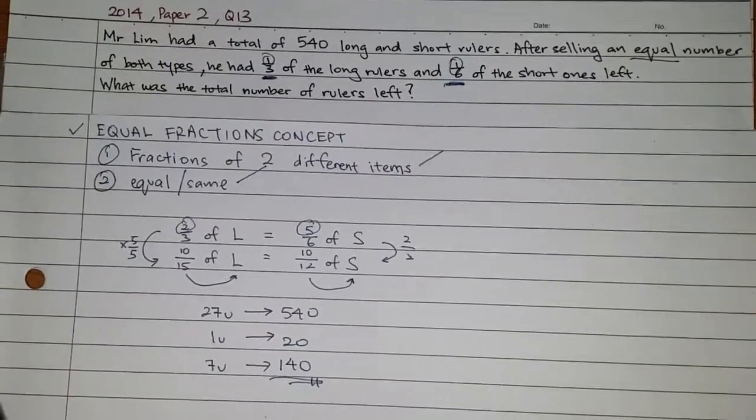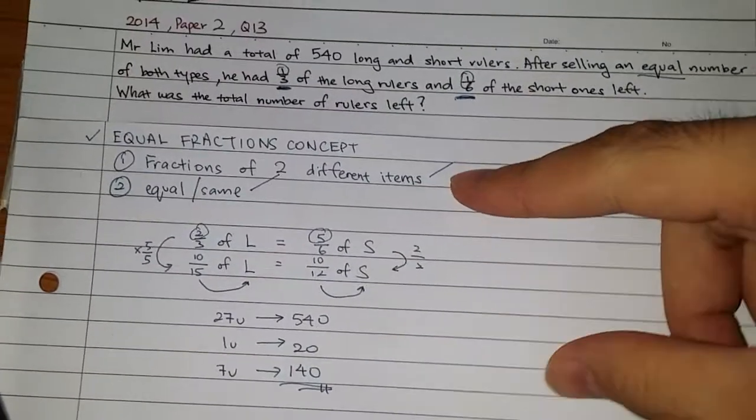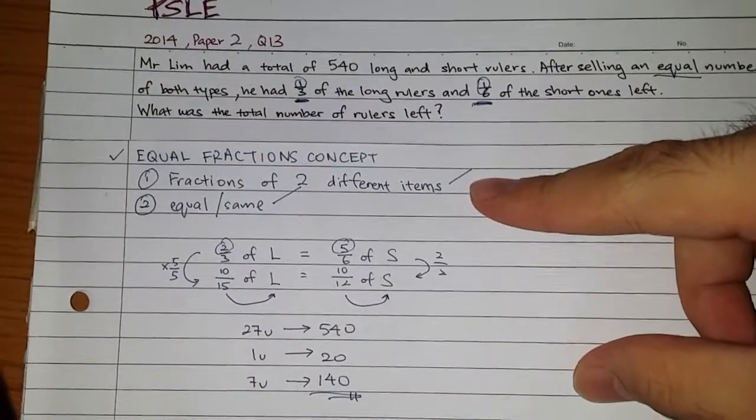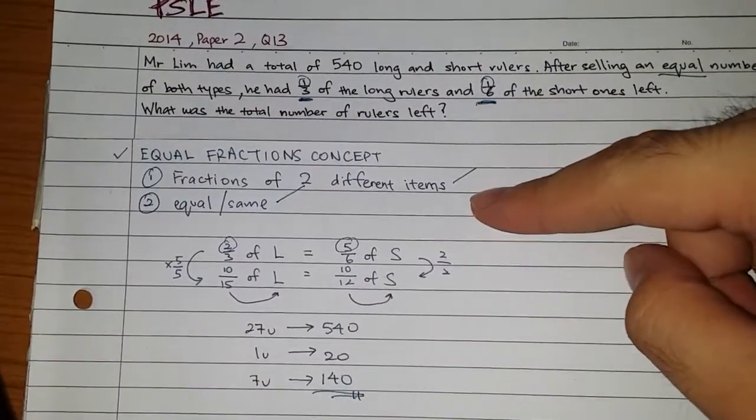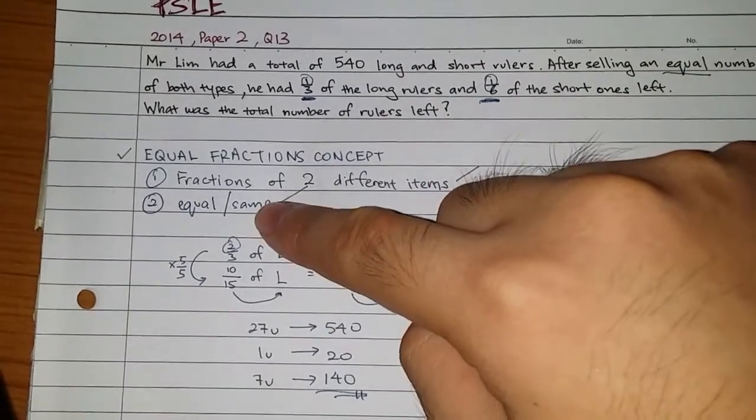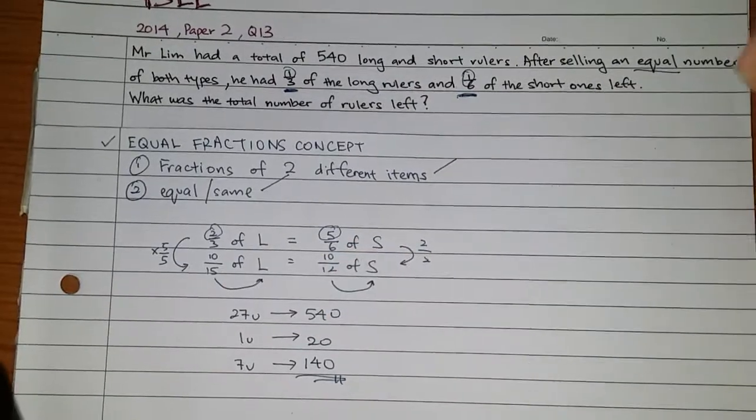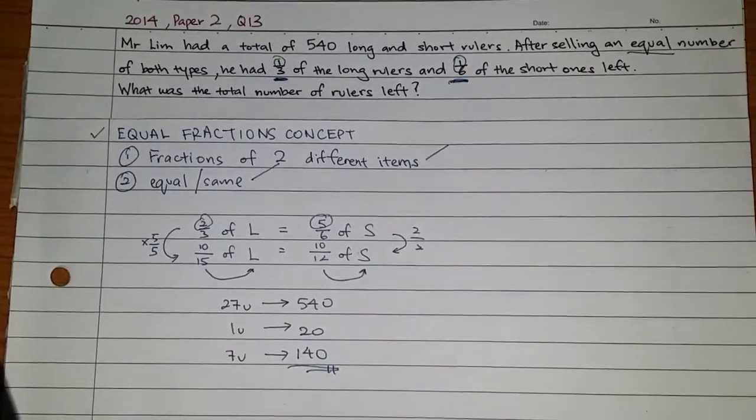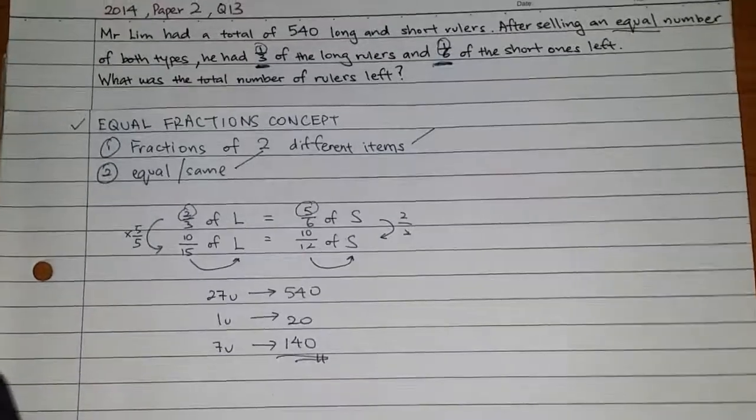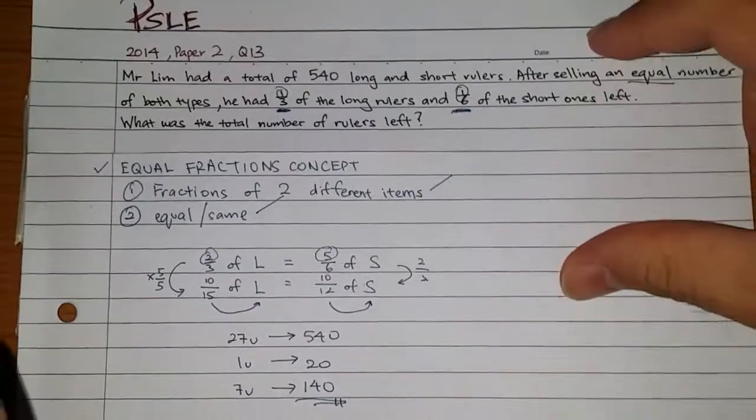My personal favorite and all-time favorite easy to apply is this equal fraction concept. So, if you find this inside the question, fraction of two different items or name of people, and the keyword equal and same appears, we can use this concept. Just write down the statement. What fraction of long is equals to what fraction of short? Then, we make numerator the same. Denominator refers to each person or each item's total units and solve it. I don't have to cut any model.